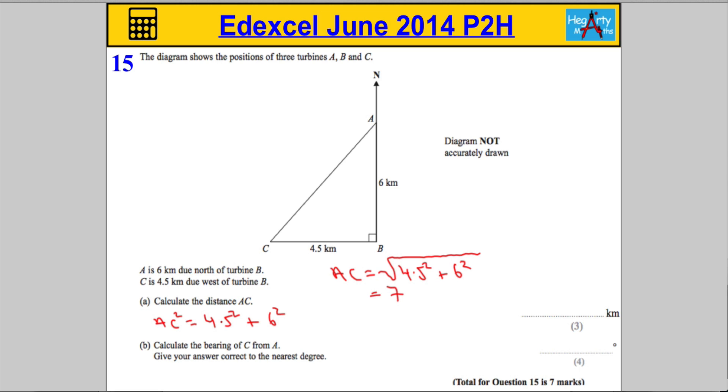So, the calculator tells me that AC is 7.5 kilometers. I was about to write centimeters there out of habit. 4.5 kilometers. Let's get that information into the diagram. 7.5 km.